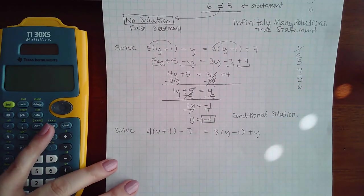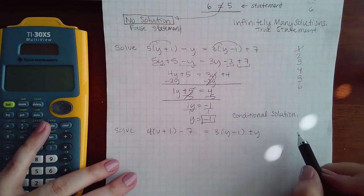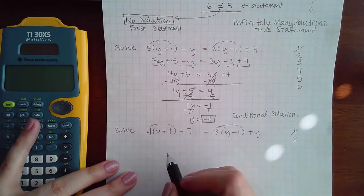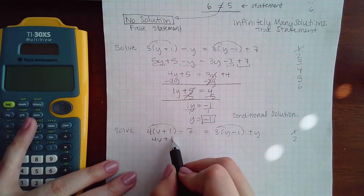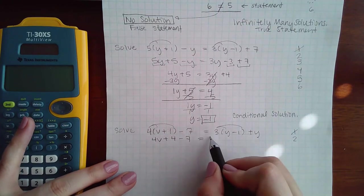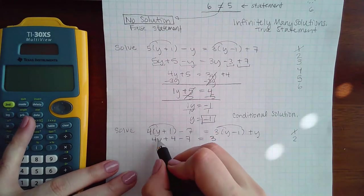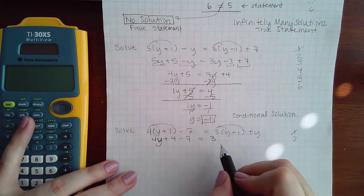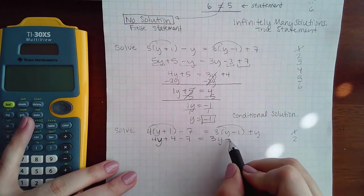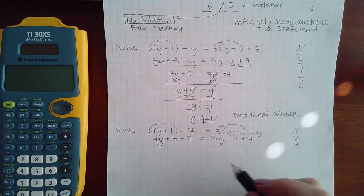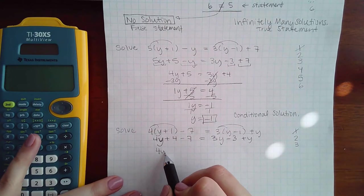That's probably what's gonna happen here, but let's check it out. So again, no fractions. Let's do the parentheses. We get 4(y+1) - 7 = 3y... oh I have two different variables here, it should be y not v. So 4y and then 3y minus 3. Let's combine like terms on both sides. So we have 4y minus 3 and here we have 4y minus 3.